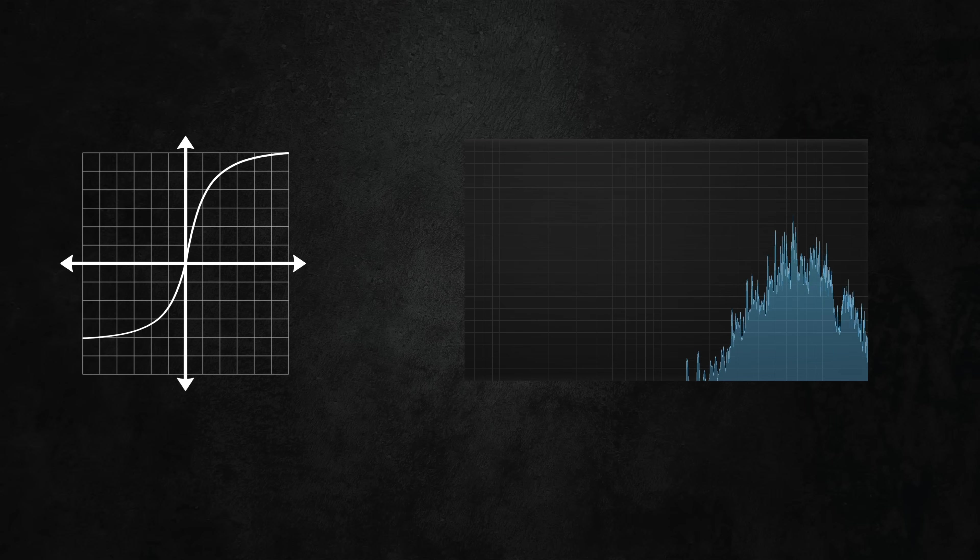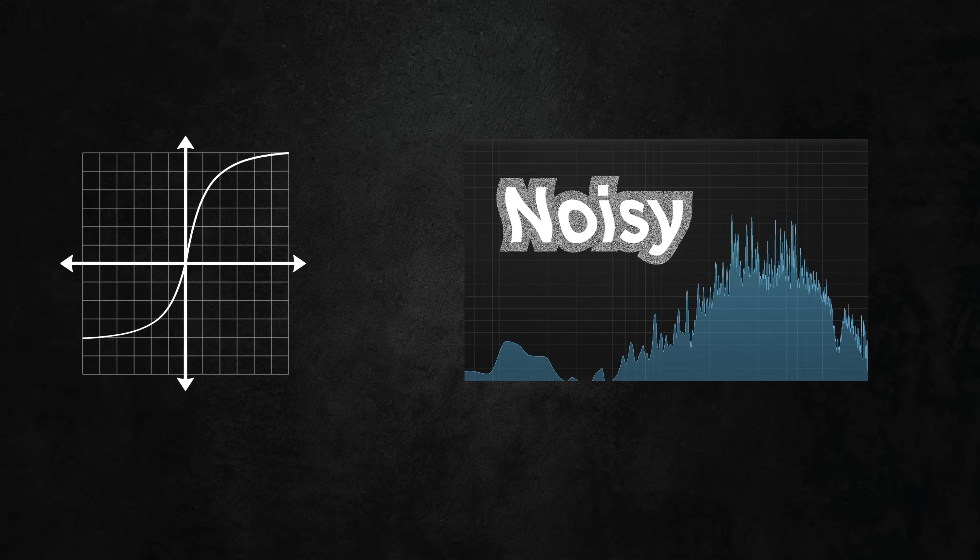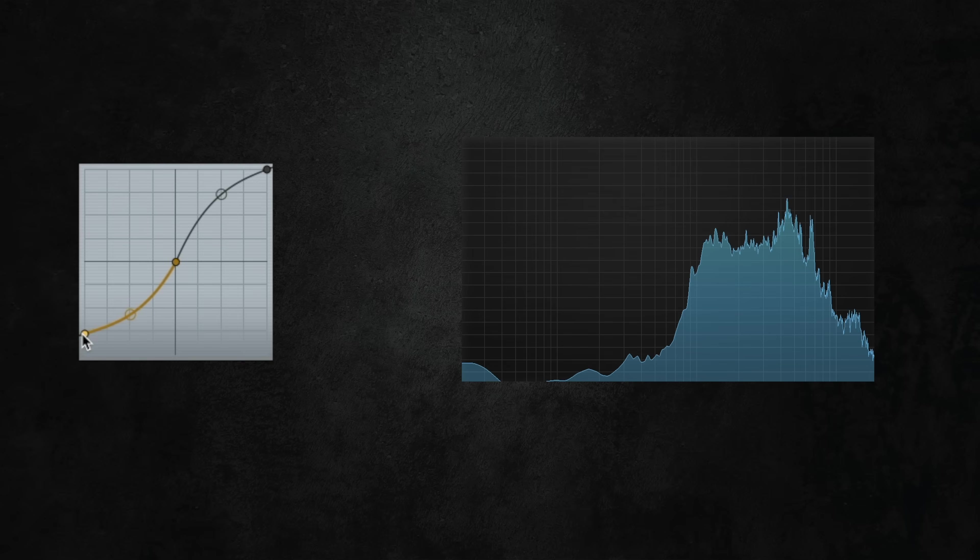But when you saturate a sound like this, the symmetry you choose is still important. Asymmetric curves can make atonal sounds even more noisy and can add a lot of low end, and oftentimes add a DC offset as well.